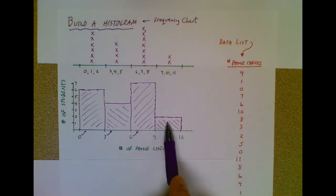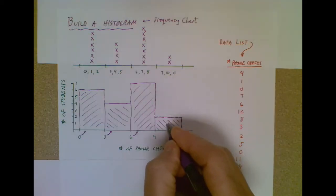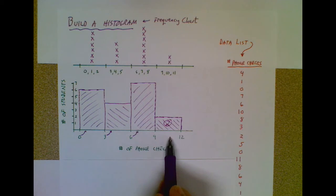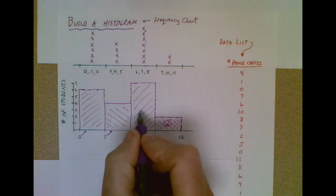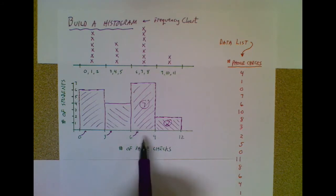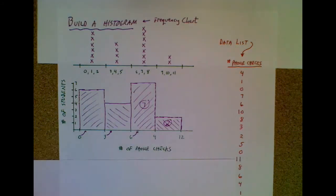So there are two students who check their phones between about nine and twelve times during the hour. This bar goes up to seven, so I can say there are seven students who check their phone between six and nine times during the hour.